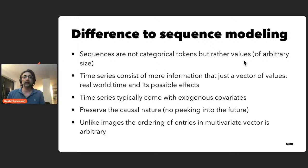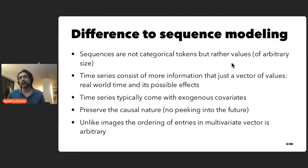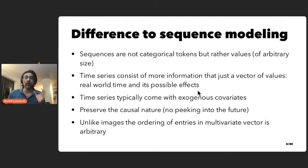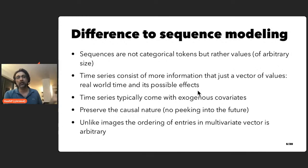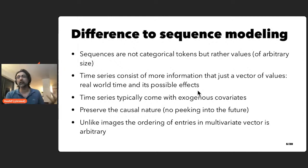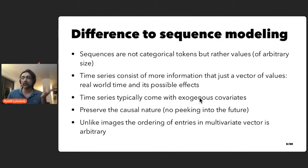Secondly, time series are more than just a sequence array of numbers — they have a time component which might contain signal for the prediction task, and the model needs to learn such patterns known as seasonalities. Thirdly, time series data typically comes with exogenous covariates. An obvious example is holidays that have occurred and will occur in the future — even if such data is not in your dataset you can use it externally if you think holidays have an effect.